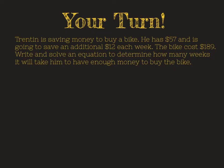And that, ladies and gentlemen, brings us to your turn. You didn't think I'd let you finish without trying one on your own, did you? All right, this problem says Trenton is saving money to buy a bike. He has $57 and is going to save an additional $12 each week. The bike costs $189. Write and solve an equation to determine how many weeks it will take him to have enough money to buy the bike. So pause the video, write an equation, and then solve it, and then push play to see how you did.